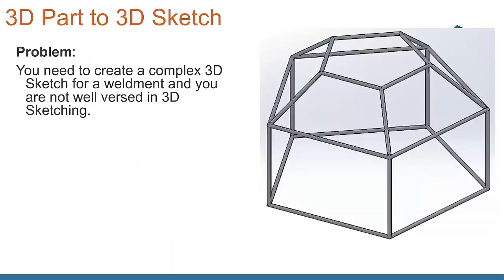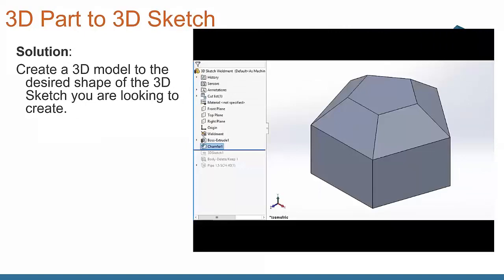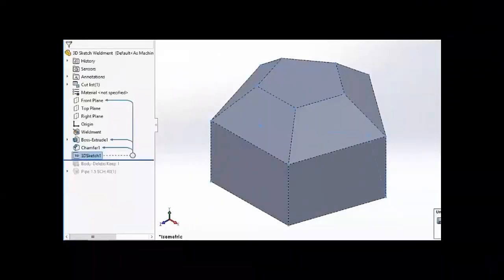Next part that we have here is turning a 3D part into a 3D sketch. We need to create a complex 3D sketch for a weldment, and if you're not that well versed in 3D sketching, what is an easy way that we can get around that? We got a little video that kind of goes along with it. So what we do is we create our 3D model, we then create a 3D sketch, and we use SolidWorks to select all the edges of our model.